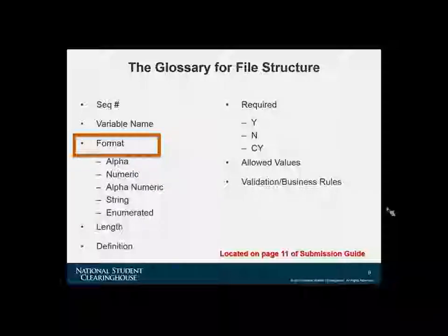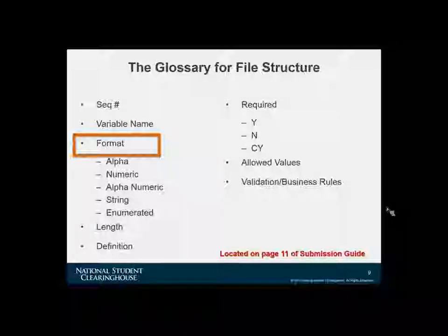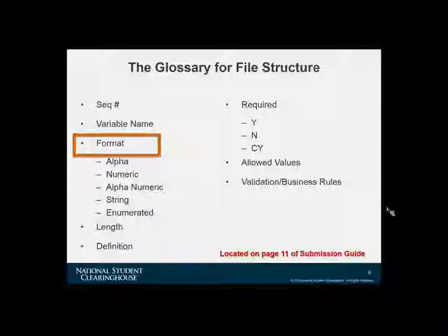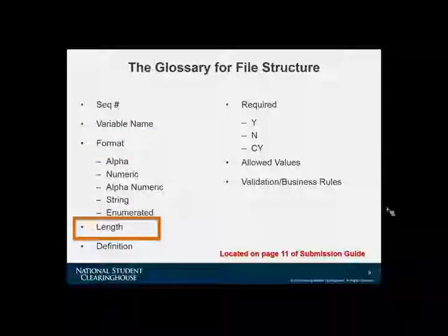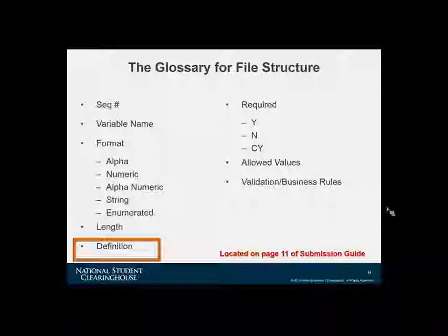The format and type of each data element is provided as well. Alpha means only alphabet characters; numeric is numbers only; alphanumeric is a combination of each; and a string element means basically anything goes. An enumerated field is multiple choice — a constraint field that only accepts certain values. The data types are rather strict. For example, if it's defined as an alpha field, then no numbers, special characters, or even spaces are allowed unless otherwise indicated. The length indicates the maximum number of characters allowed. We identify which fields are required, not required, or conditional: Y for yes required, N for no not required, and CY for conditionally yes required.